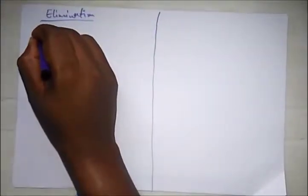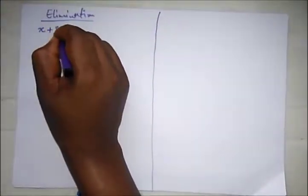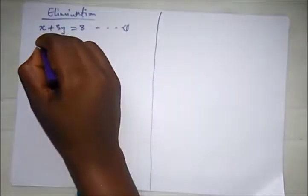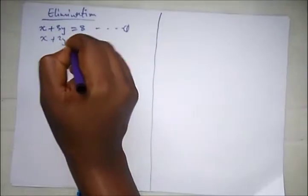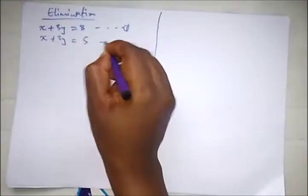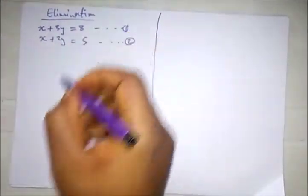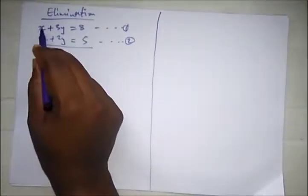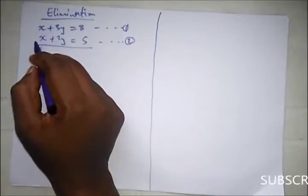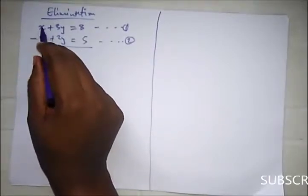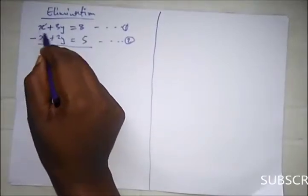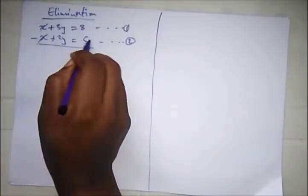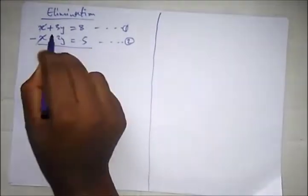So here, these are the two equations. We have x + 3y = 8, equation 1. Then x + 2y = 5, equation 2. So from here, elimination method is just to eliminate one value. Let's say we are starting with x. To eliminate x, what do we do? We just subtract. X would cancel x, that's 0. So if we are subtracting, the minus sign would affect all of these variables of equation 2.